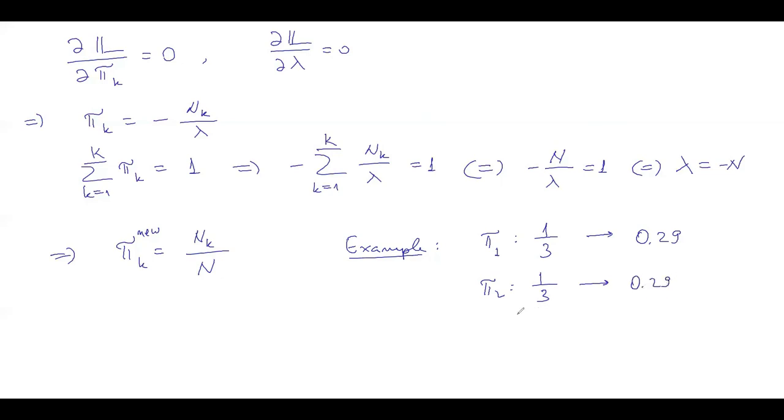The way to really read this is that we started with a mixture model where the three components had equal contribution to the overall model. After we examined the data set, we conclude that as a first update we should update the first two components to have less importance than they had before, and we are increasing the importance of the third component from 1/3 to 0.42.